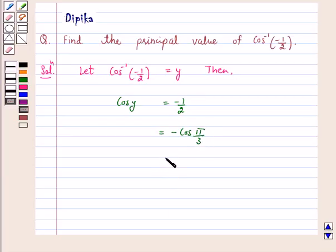So this is equal to cos of pi minus pi by 3, and this is equal to cos 2 pi by 3.